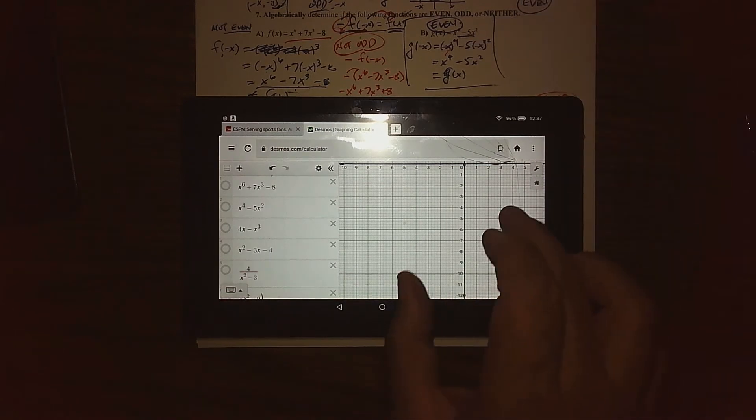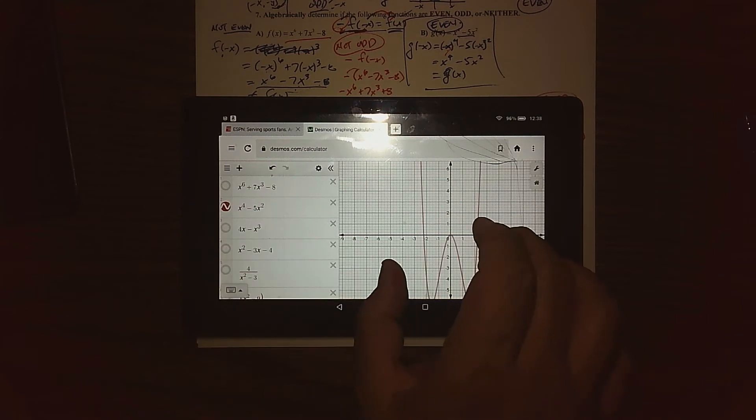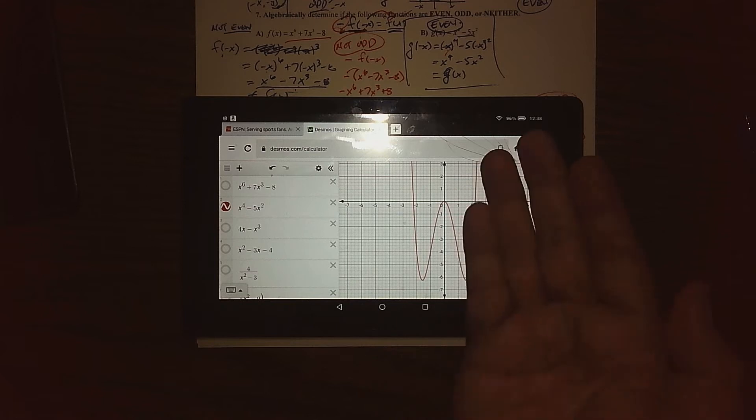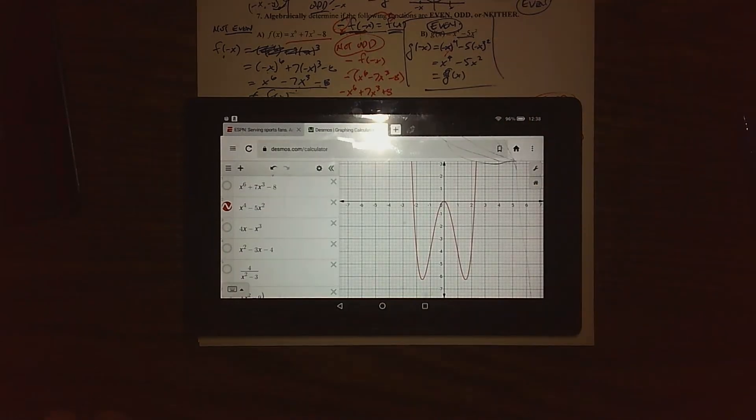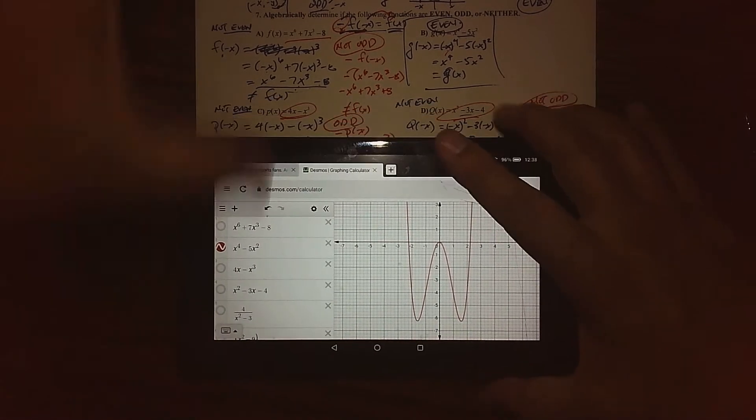The next one we found to be even, so what I'm expecting is the graph to be nice and symmetric with the y-axis. So when I graph that, lo and behold what I get is kind of a W shape. Definitely the picture over here matches the picture over there, so our algebra matches the picture.